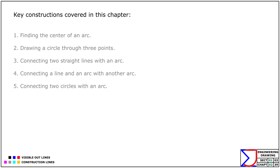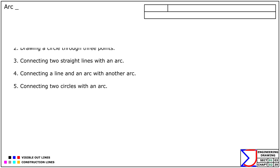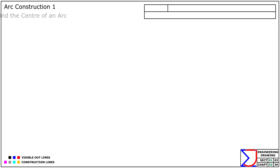In this chapter we will dive into the construction of arcs, a fundamental aspect of geometric drawing. The key constructions we will cover are: one, finding the center of an arc; two, drawing a circle through three points; three, connecting two straight lines with an arc; four, connecting a line and an arc with another arc; five, connecting two circles with an arc. By mastering these techniques you will gain the foundational skills to create precise and accurate arcs in engineering drawings.